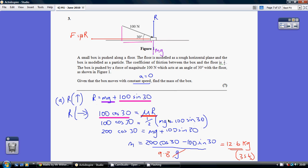So our only unknown now is M, because of course G is the gravity, 9.8. So we can now rearrange and solve for M, giving us 12.6 kilograms.